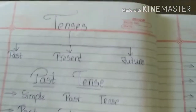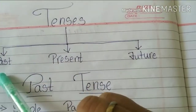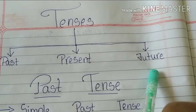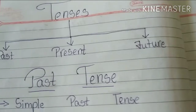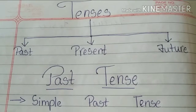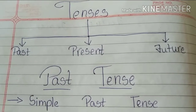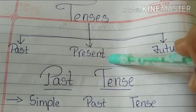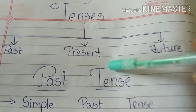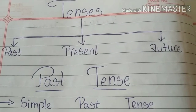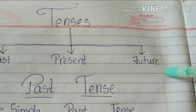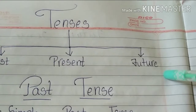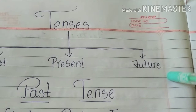Basically there are three different types of tenses: past tense, present tense, and future tense. Past tense refers to actions that have already happened. Present tense refers to what is happening now or what is programmed to happen in the near future. Future tense refers to actions that are going to happen in the future.